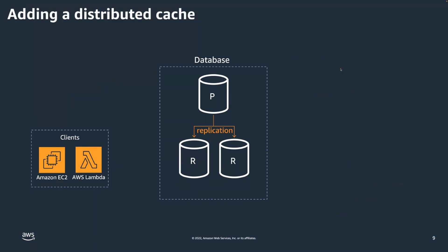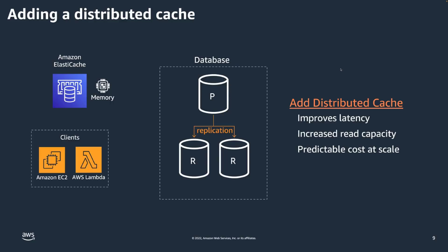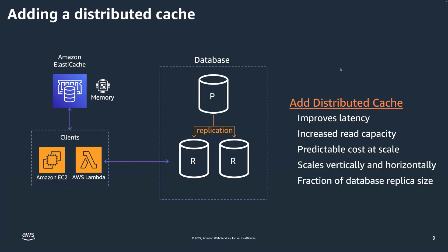To get around this, we can add a distributed cache — something like Amazon ElastiCache. It improves latency because it's all in-memory with sub-millisecond lookup time, and it provides increased read capacity. You can vertically and horizontally scale Amazon ElastiCache. It has a very predictable cost at scale, scales linearly and incrementally, and scales both vertically and horizontally while your application is online. It's really only a fraction of the database size — if you have 100 terabytes of data, you don't need to cache all of it, just what your cache hit rate requires.